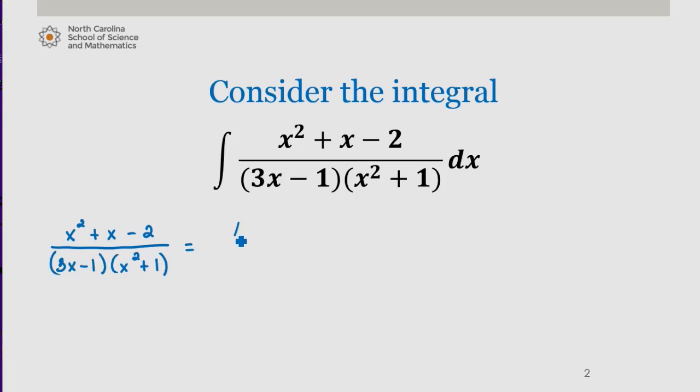3x minus 1 is a linear factor, so I have A over 3x minus 1 plus, now x squared plus 1 is a quadratic factor that is irreducible. In other words, I cannot decompose it into real number factored form. In that case, my numerator is Bx plus C to account for an x term and a potential constant term.